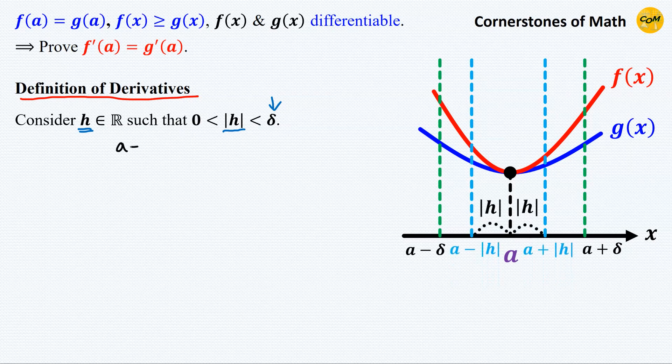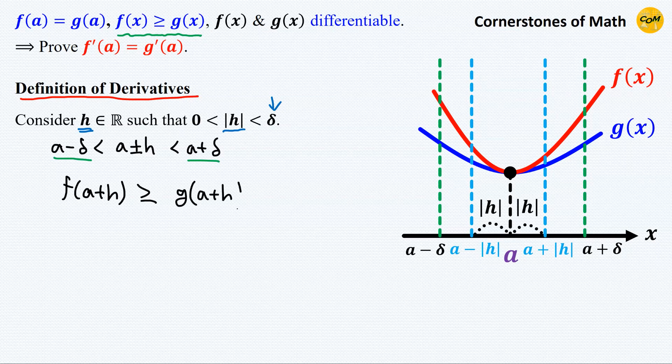So it is obvious that either a plus h or a minus h is greater than a minus delta, but less than a plus delta. And in this interval, f(x) is greater than or equal to g(x). So we have f(a + h) is greater than or equal to g(a + h).